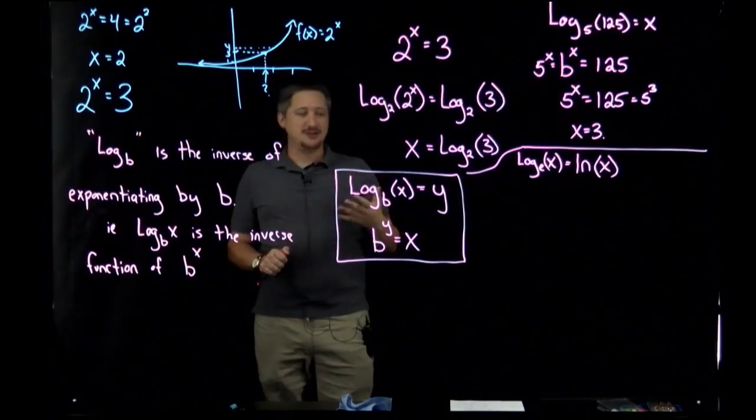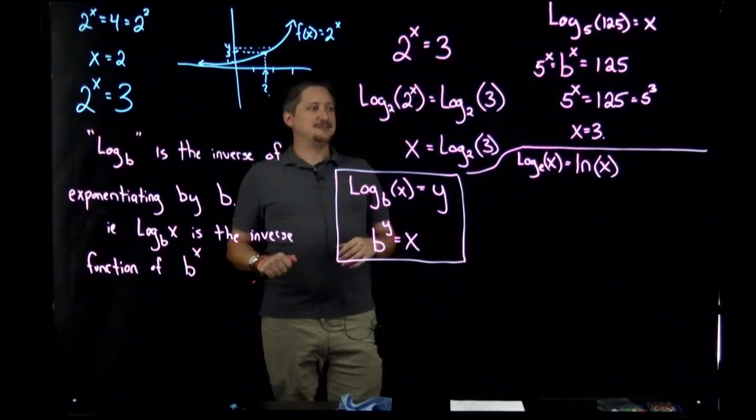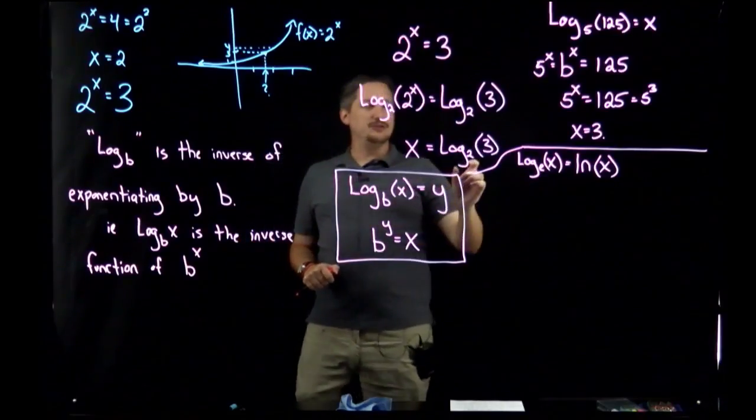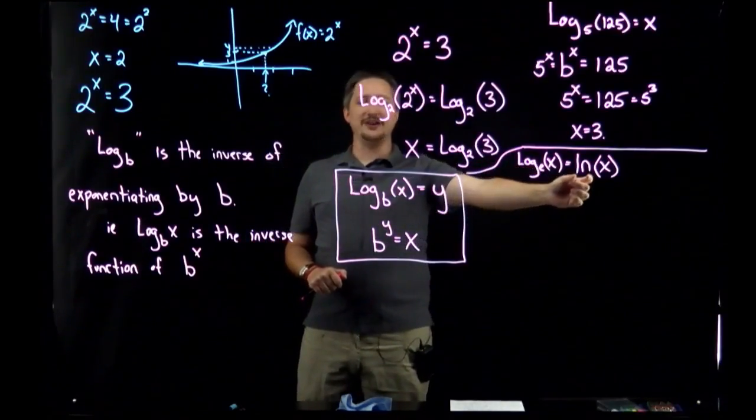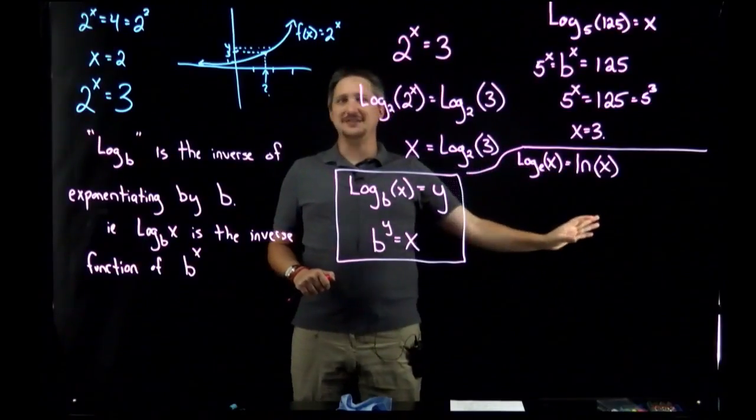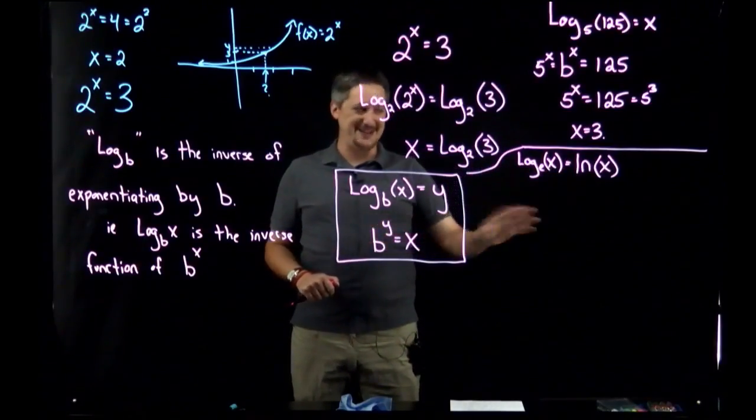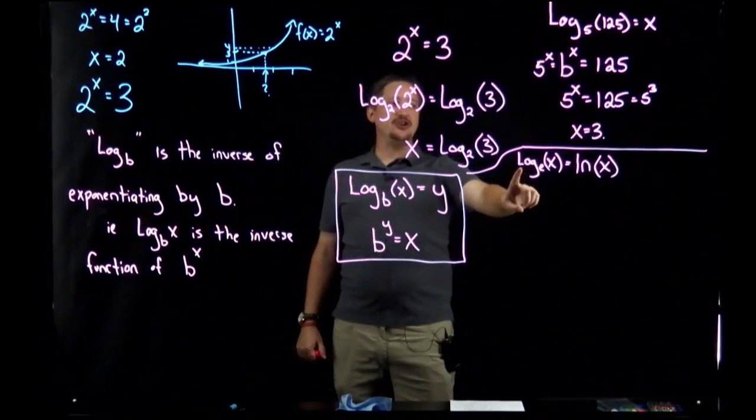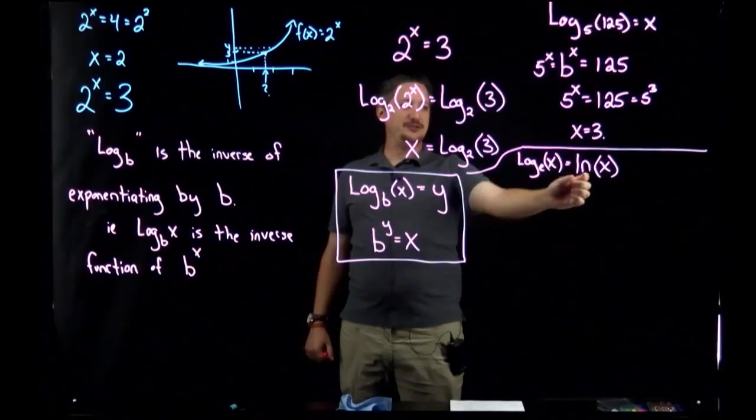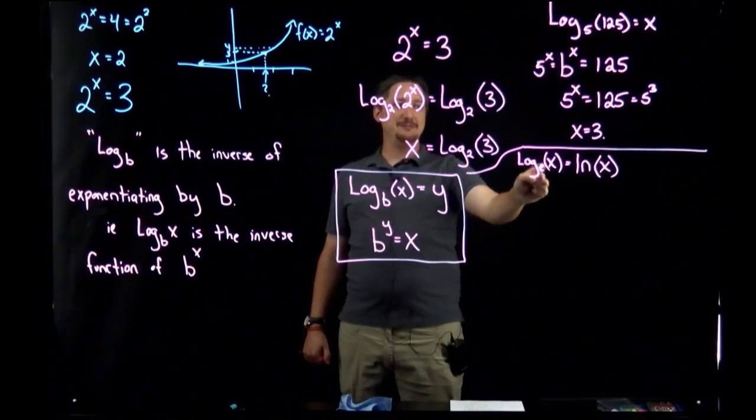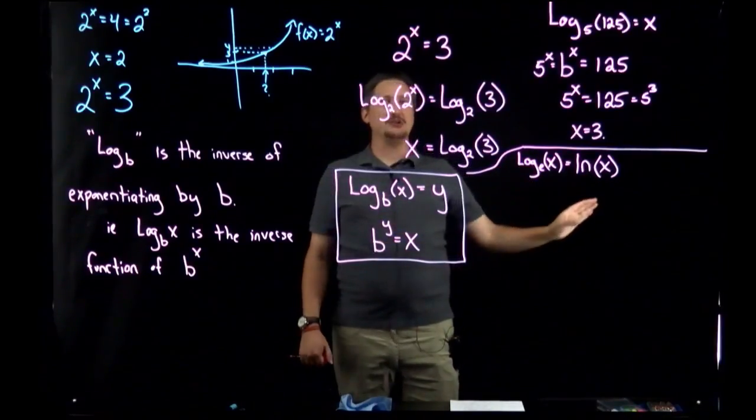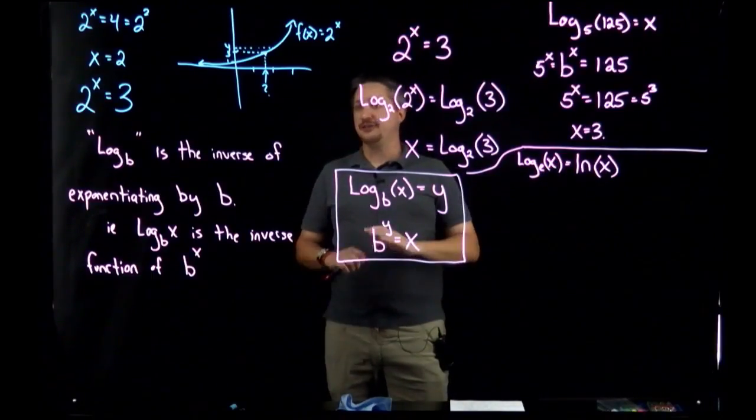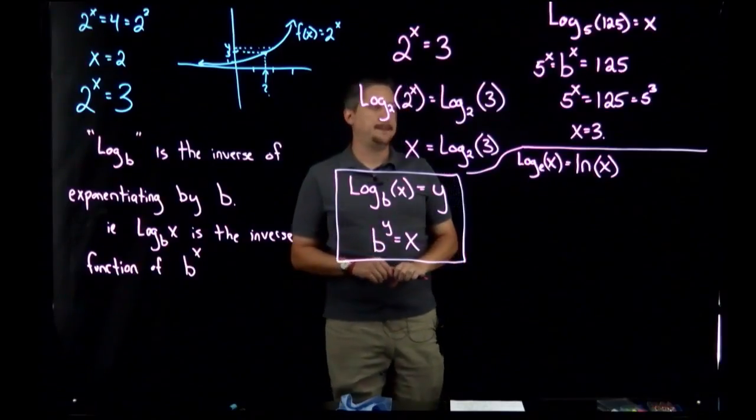They're all the same in terms of properties. The properties don't change. A lot of times pre-calc teachers show a sheet of properties for log base b and another set for ln, but they're exactly the same properties because they are the same things. Natural log is just log base e. You could literally always write log base e and it would be perfectly correct - I wouldn't do that because ln is shorter, but you could.